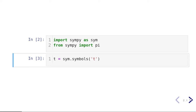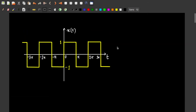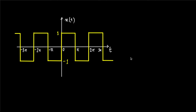Let's talk about the first signal for which we are going to calculate the Fourier series. That's a rectangular pulse signal. Using SymPy, if you want to generate the Fourier series for any periodic signal, you only need to define the signal for a full period. This signal is periodic with a period of 2 pi, so a full period runs from minus pi to pi, or equivalently from 0 to 2 pi.